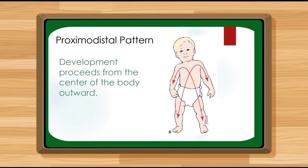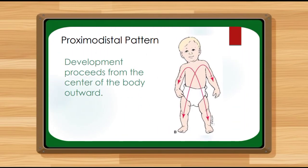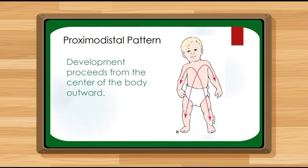Under principle number one — development is relatively orderly — we have what is called the proximodistal pattern. The proximodistal pattern means development proceeds from the center of the body outwards. The muscular control of the trunk and arms comes earlier as compared to the hands and fingers. So our development starts with the trunk and arms and then proceeds outward to the hands and fingers. That is the proximodistal pattern.